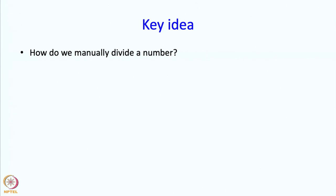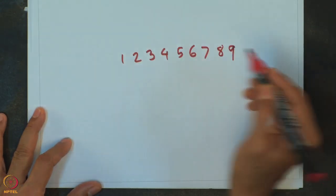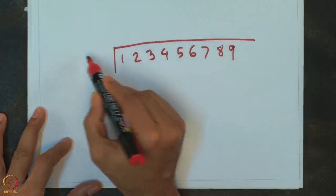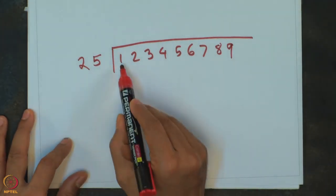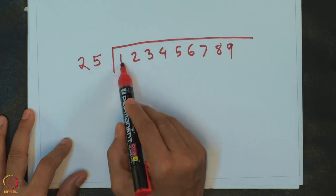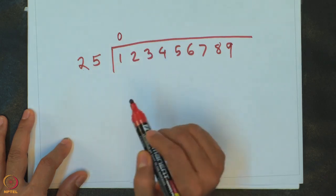Suppose we have some way of getting to the digits — how do we manually divide? Let us say we want to divide the large number 123456789 by 25. We look at the very first digit: can it be divided by 25? If it is too small, we put a 0. Then we bring in the next digit — still too small, put a 0 again. Then we bring in the third digit: now 123 can be divided. We try quotient 4, getting 100, and subtract to get a remainder of 23.